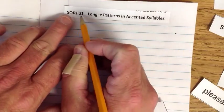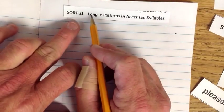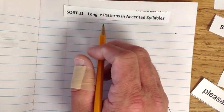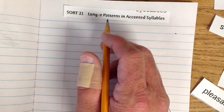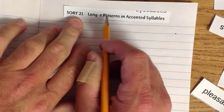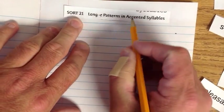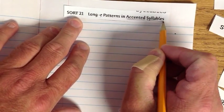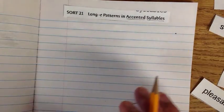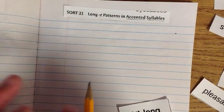Alright. So we've got sort 21. We've got the long E. Remember the long E is an E sound. Okay. Long E patterns in accented syllables. That is key. What's a syllable?